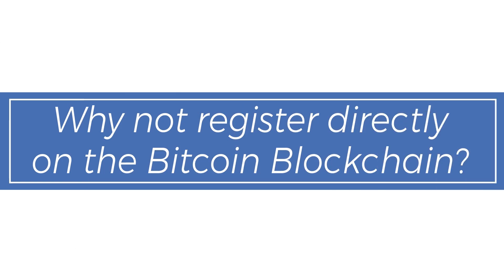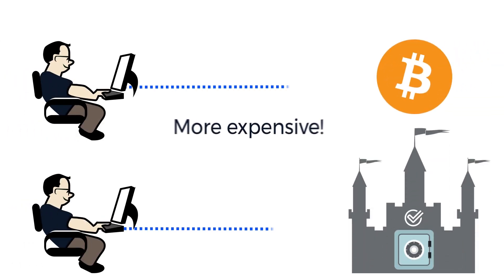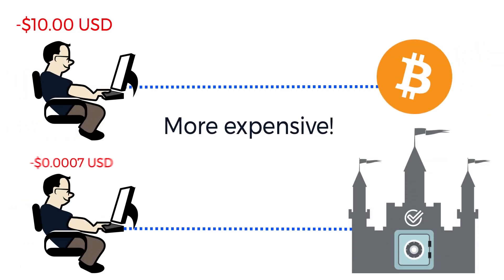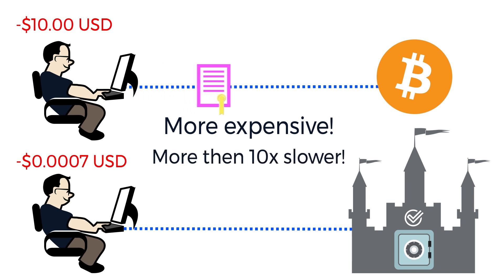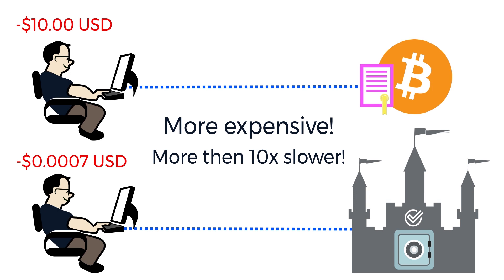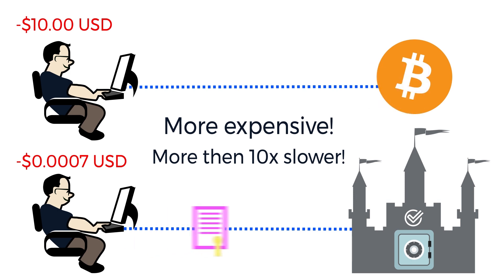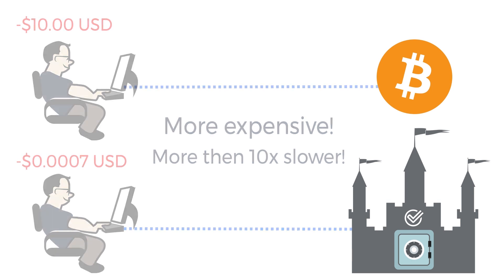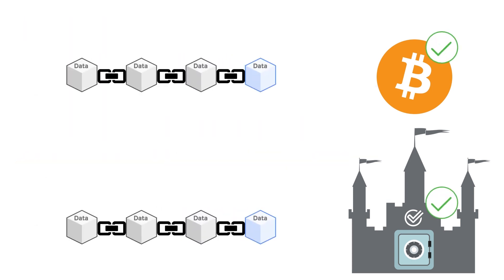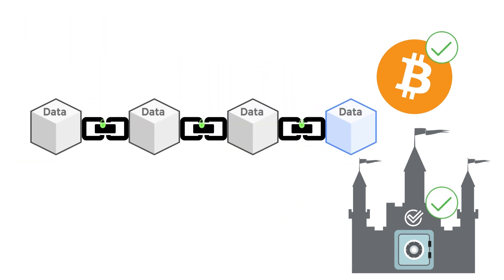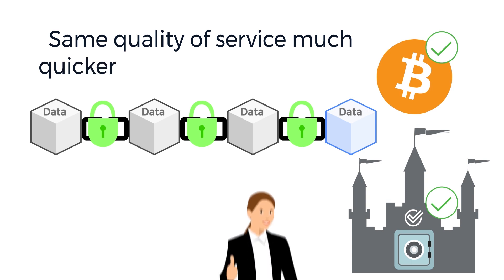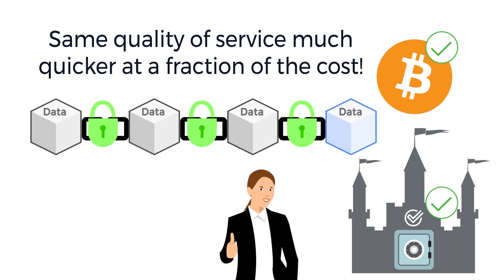Why not register directly on the Bitcoin blockchain? Bitcoin's fee is much more expensive than using DeepVault, and it is over 10 times as slow. It takes at least 10 minutes to register and verify a file with Bitcoin. With DeepVault, it takes less than a minute. Since the Bitcoin blockchain guarantees the DeepOnion blockchain, you are getting the same quality service much quicker and for a fraction of the cost.